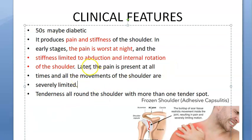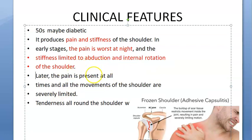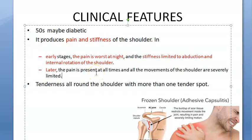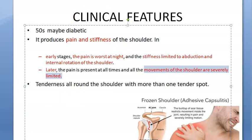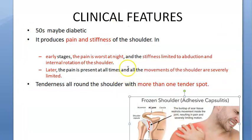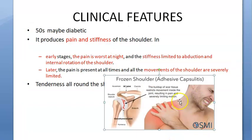The pain is present at all times later on. In the early stages, pain is worst at night. Later, the pain is present at all times and movement of the shoulder is severely limited - all movements appear limited. There is tenderness around the shoulder in more than one spot - when you examine the patient, there will be more than one tender spot.